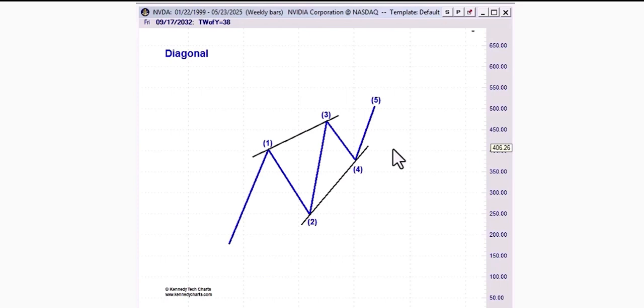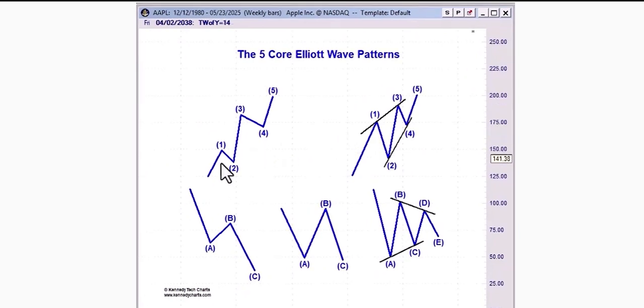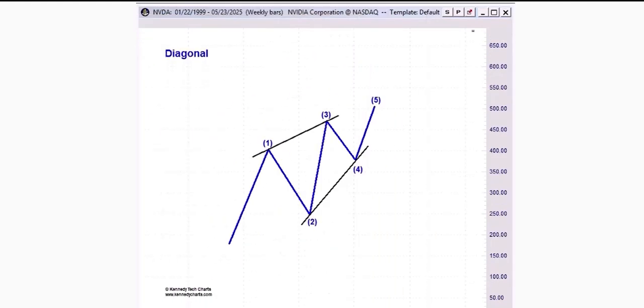Now also, ending diagonals in and of themselves are somewhat of a rare pattern. Rare might be too strong of a word, but I would probably say most of the time, 70-80% of the time, you're going to see whenever it comes to a motive wave structure, you're going to encounter the impulsive move. The other remaining 20% of the time or probably even less, that's where you'll encounter that ending diagonal.